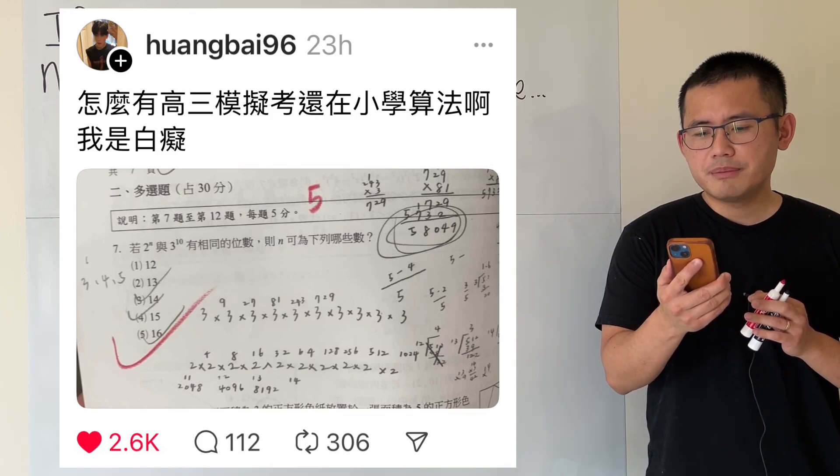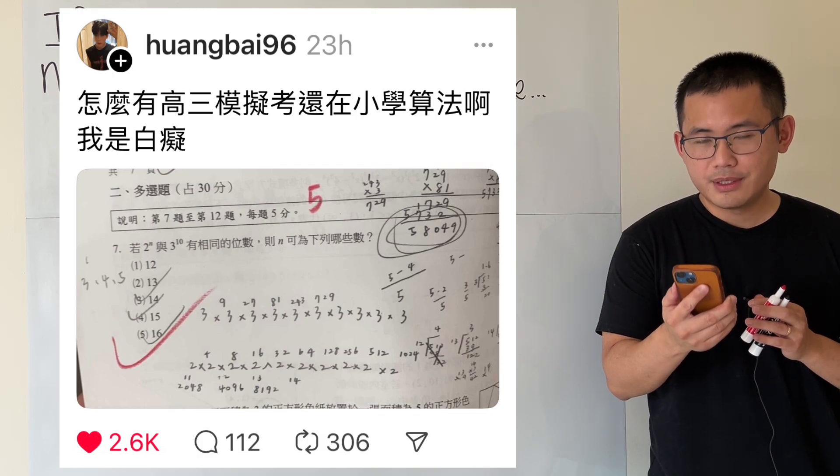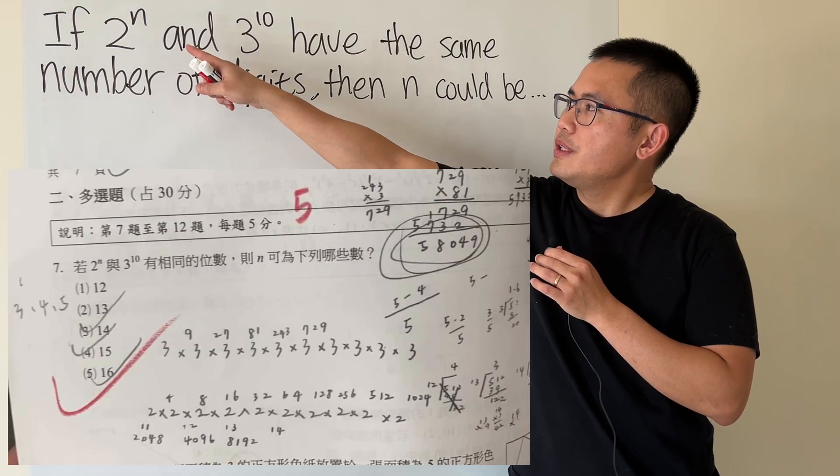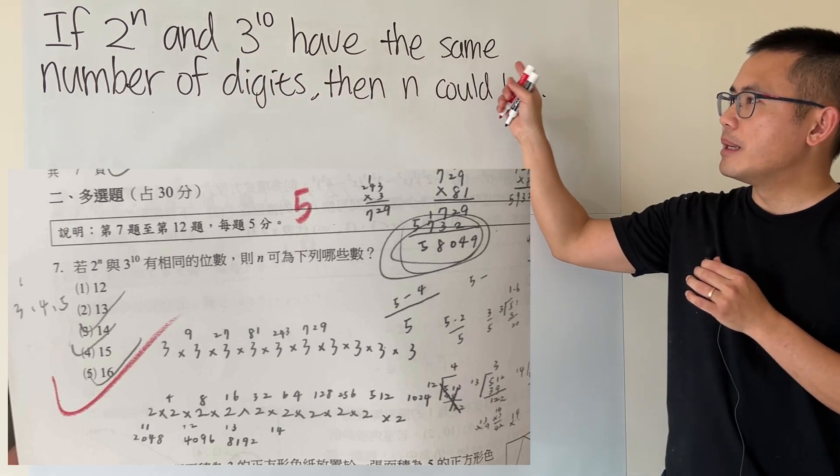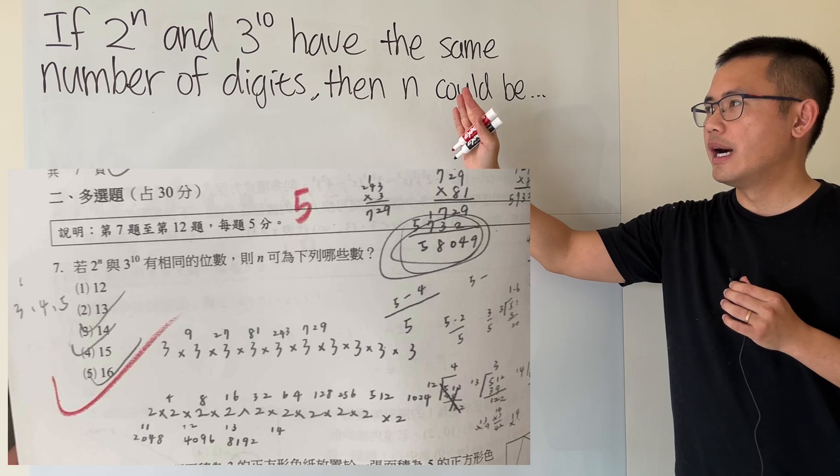This is a high school math question, but I'm still using the elementary school way to do it. Am I stupid? Well, let's take a look at the question. It says, if 2^n and 3^10 have the same number of digits, then we'd like to find out the possibilities for n.